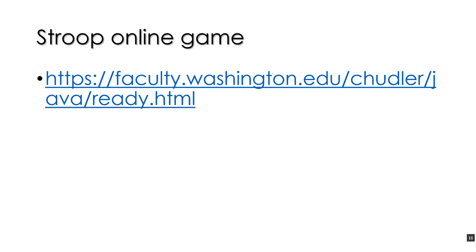A great example of this is the Stroop Online Game — there's the link right there. I'd like you to go do the Stroop Online Game and write down your scores. Stop the video now, open up this link, go do the game, and write down your two sets of scores and label which scores are which.